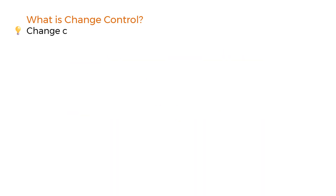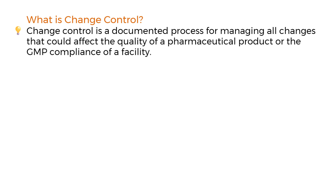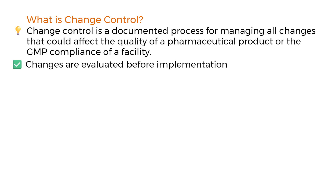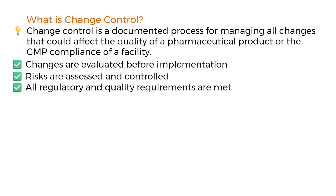First of all, let us understand what change control is. Change control is a documented process for managing all changes that could affect the quality of a pharmaceutical product or the GMP compliance of a facility. It ensures that changes are evaluated before implementation, risks are assessed and controlled, and all regulatory and quality requirements are met.